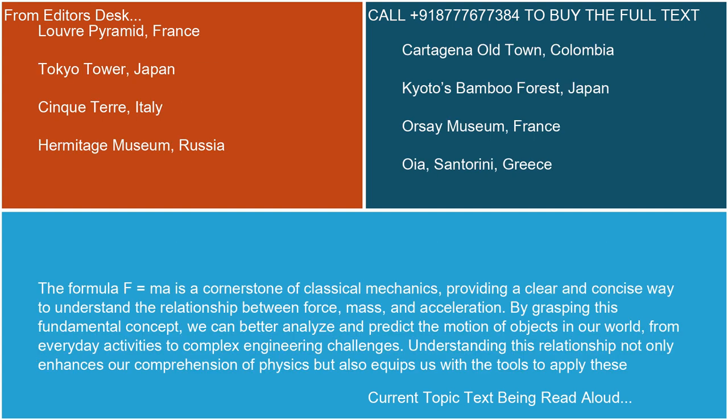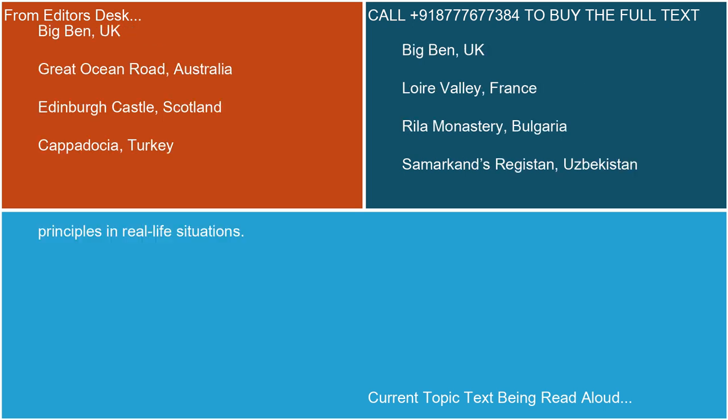Conclusion. The formula F equals ma is a cornerstone of classical mechanics, providing a clear and concise way to understand the relationship between force, mass, and acceleration. By grasping this fundamental concept, we can better analyze and predict the motion of objects in our world, from everyday activities to complex engineering challenges. Understanding this relationship not only enhances our comprehension of physics, but also equips us with the tools to apply these principles in real-life situations.